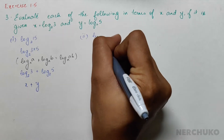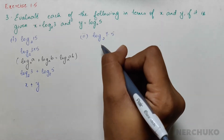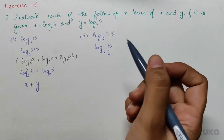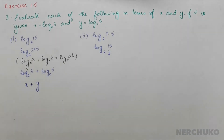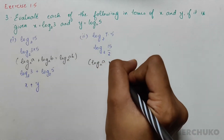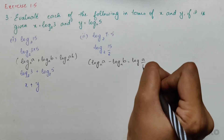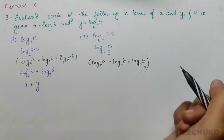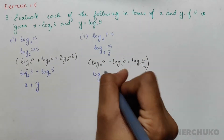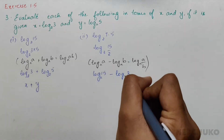For the second part, we have log 7.5 to base 2. Log 7.5 can be written as log(15 ÷ 2) to base 2. Applying the formula log a (base n) minus log b (base n) = log(a ÷ b) to base n, we get log 15 to base 2 minus log 2 to base 2.